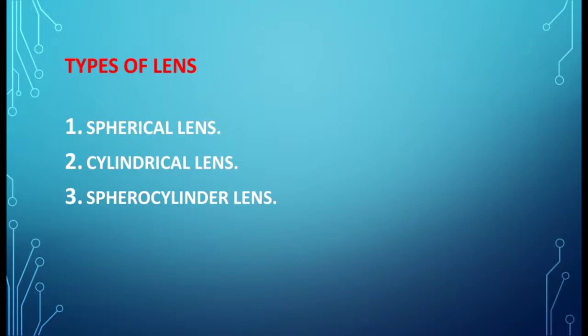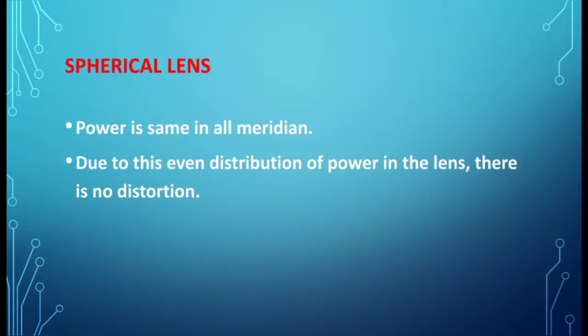There are three types of lens: spherical lens, cylindrical lens, and sphero-cylinder lens. In a spherical lens, the power is the same in all meridians, so due to this there is no distortion. Distortion means objects look somewhat bent. Due to the even distribution of power in the lens, there is no distortion in spherical lens.